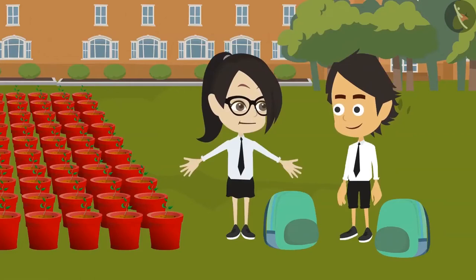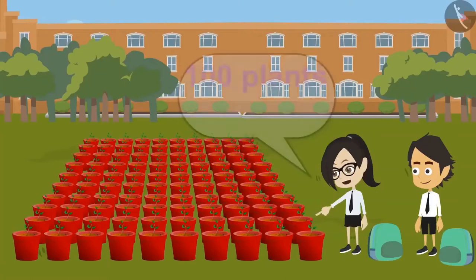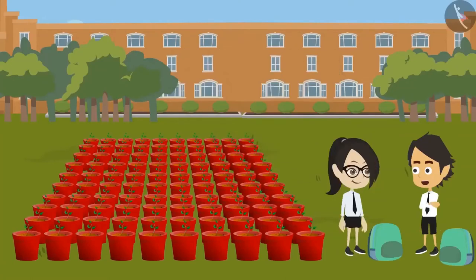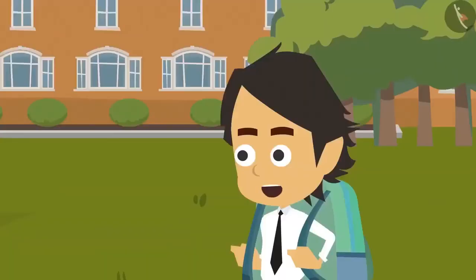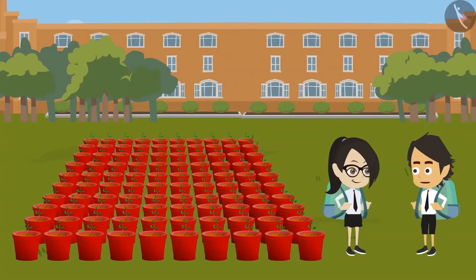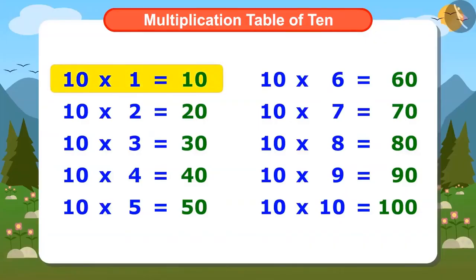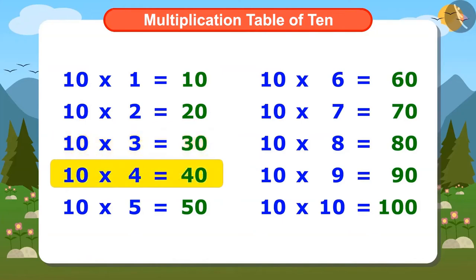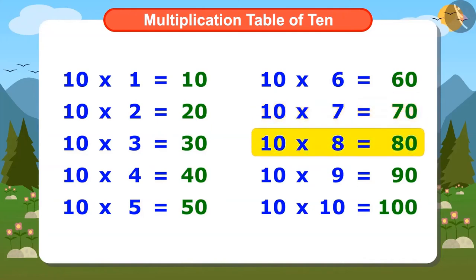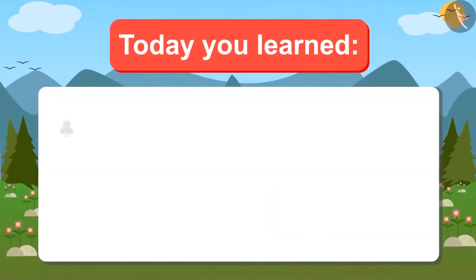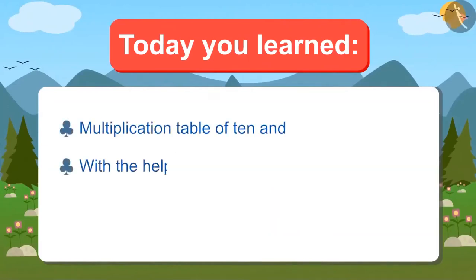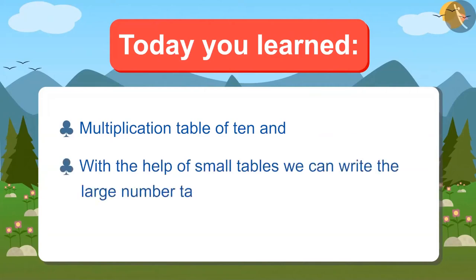Since you know the entire multiplication table of 10, you can immediately tell that there are a total of 100 plants. Yes, that's the benefit of multiplication tables. Without the use of paper and pen, you can solve some questions easily. Today we have learned multiplication tables and came to know that with the help of small tables, we can write the tables for large numbers.